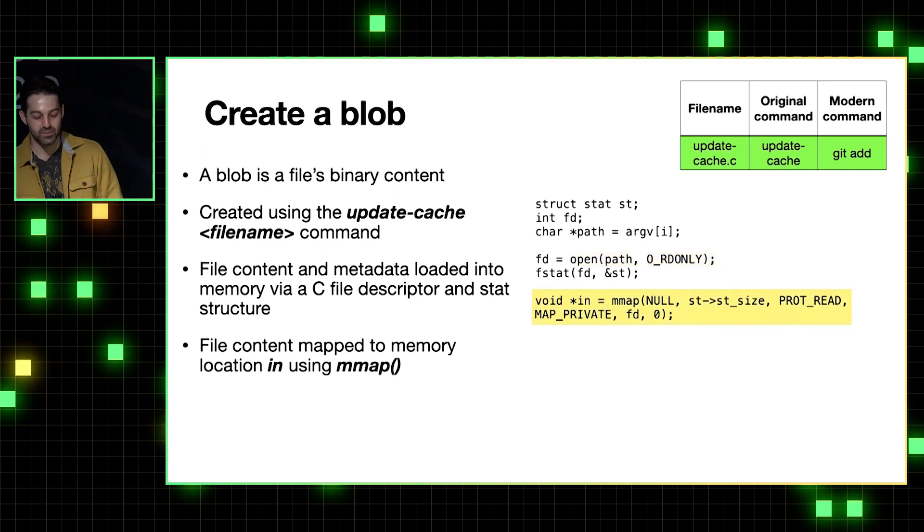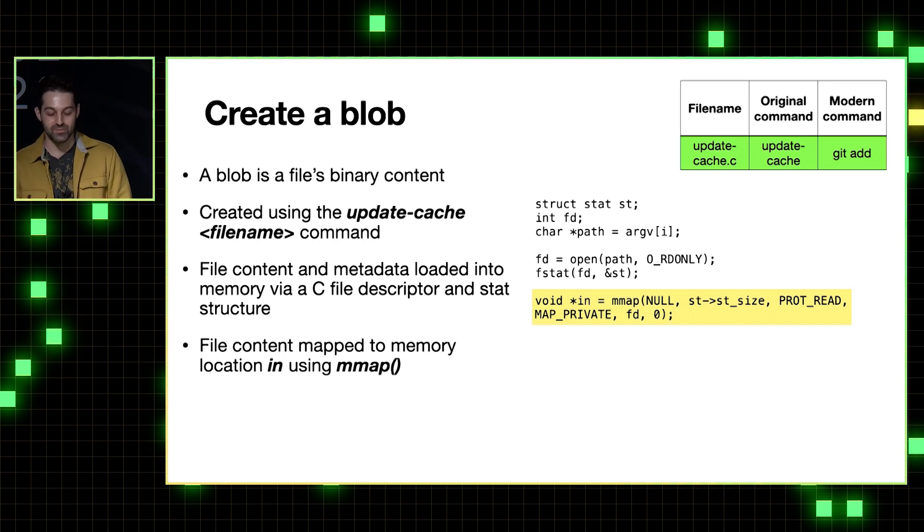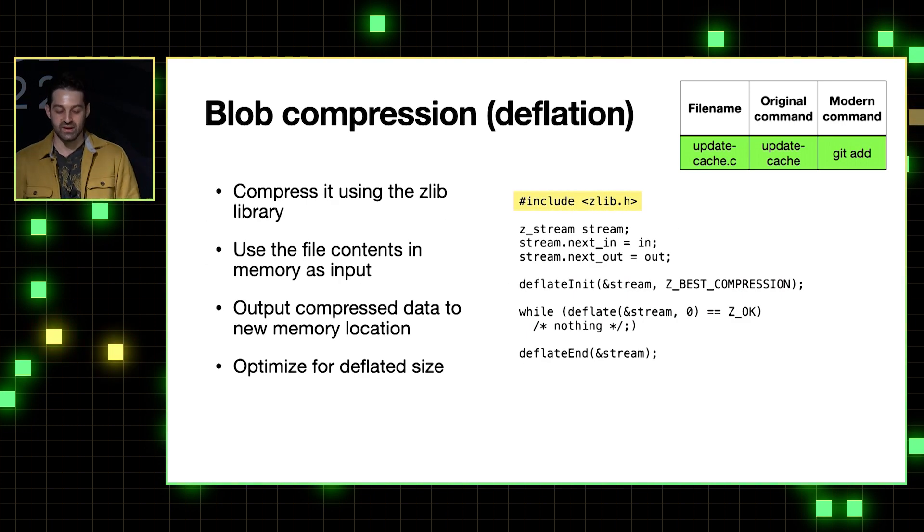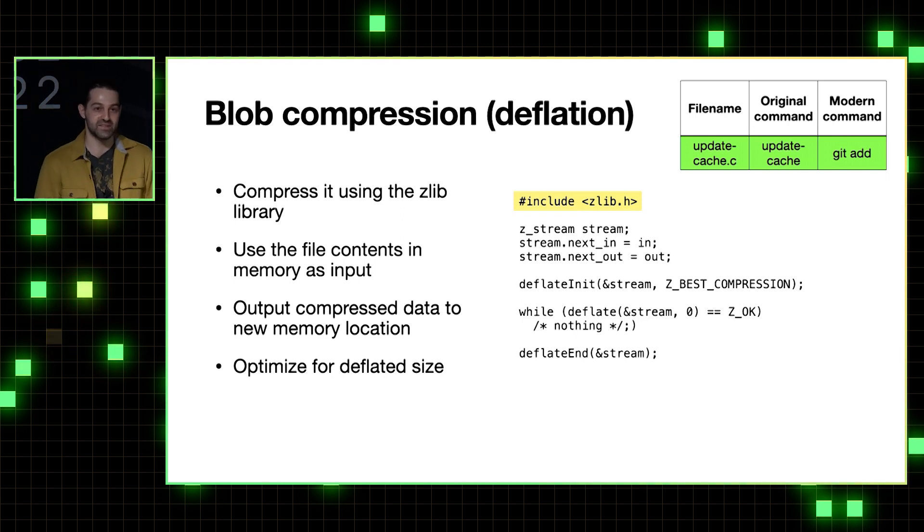And then it uses the open function in C to open that file for reading. And then it uses this complicated-looking function called mmap, but it's really not that bad. It will just take the file's content and make it accessible to Git's code in a memory location that is accessible through that variable called in right there.